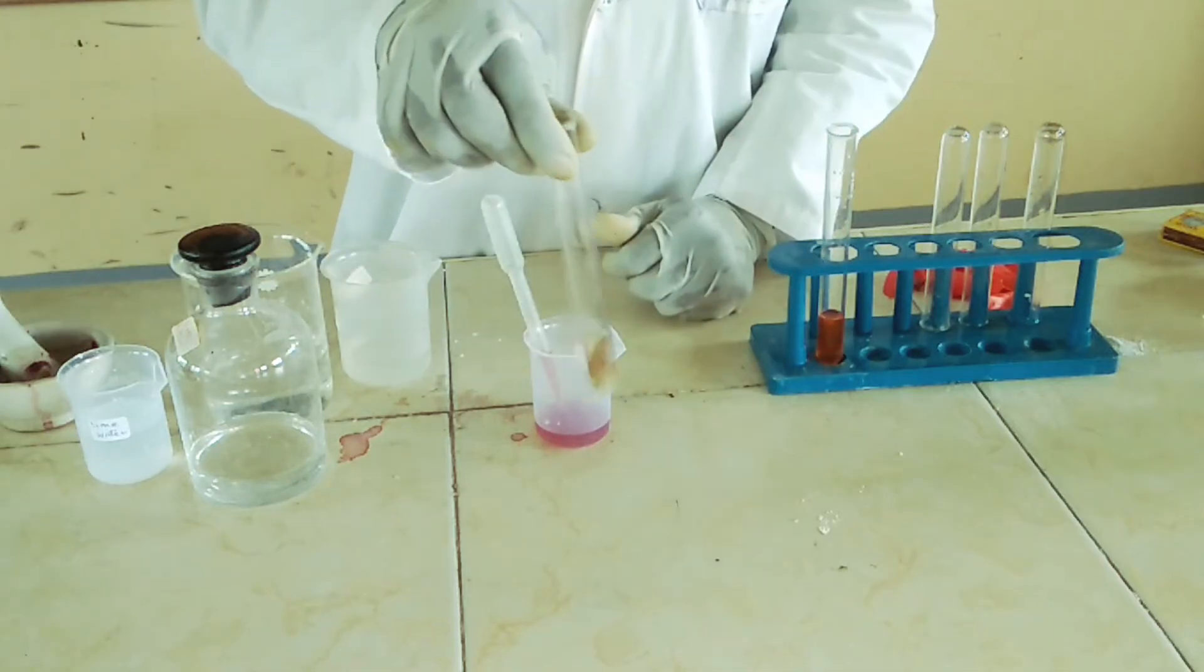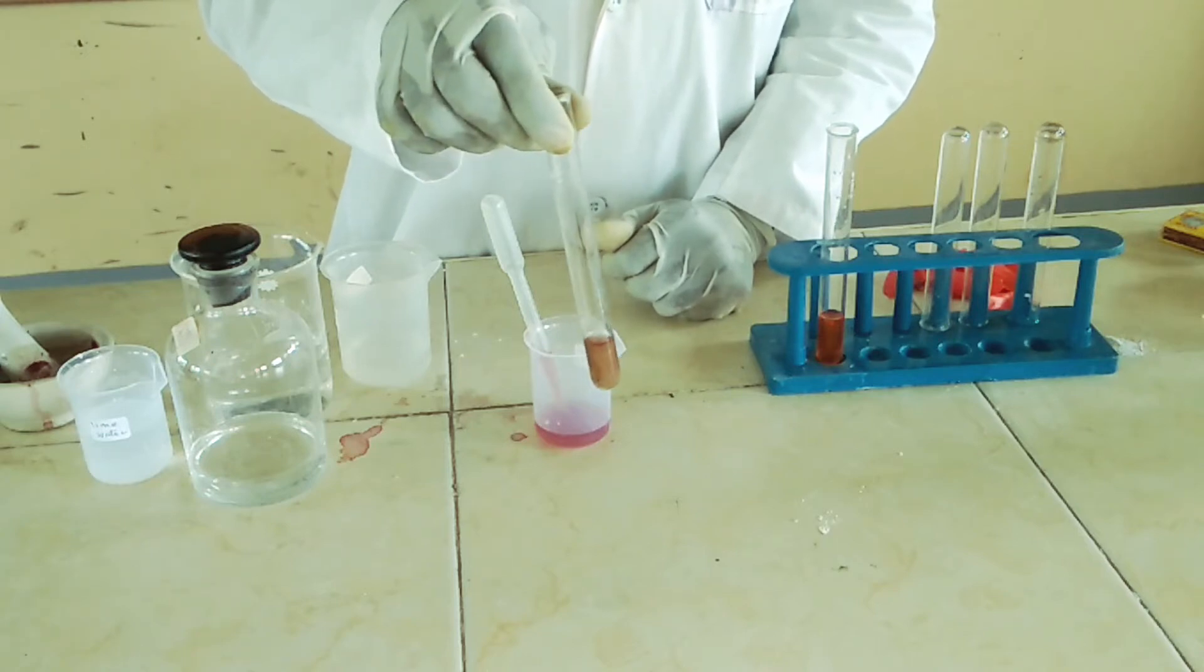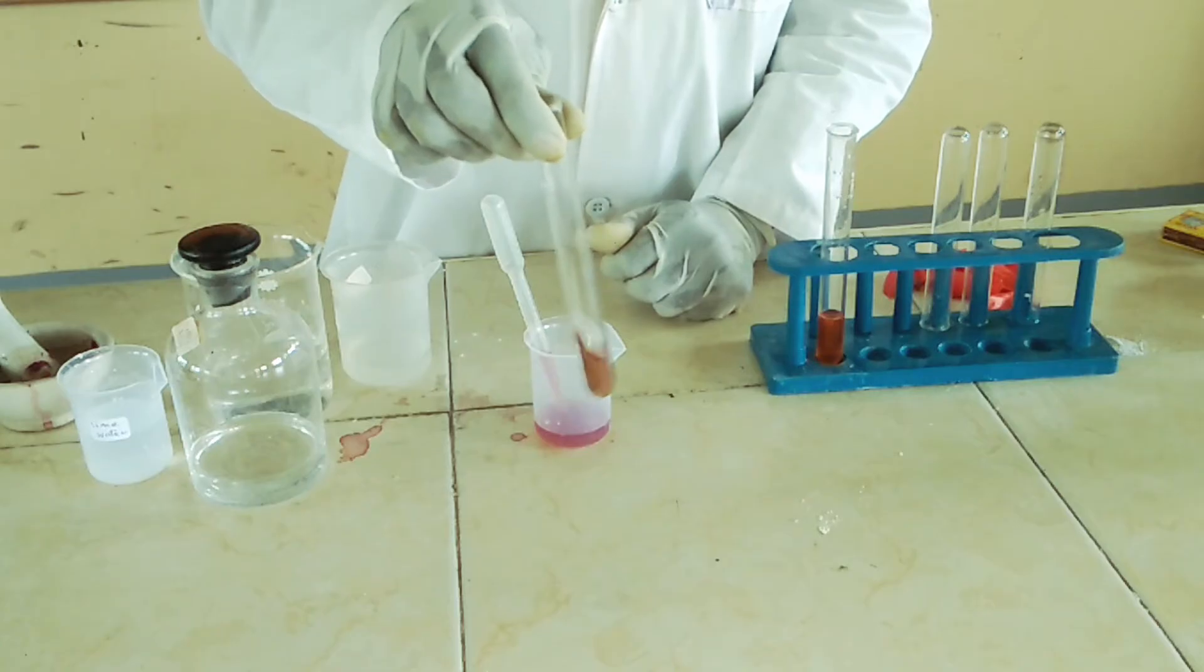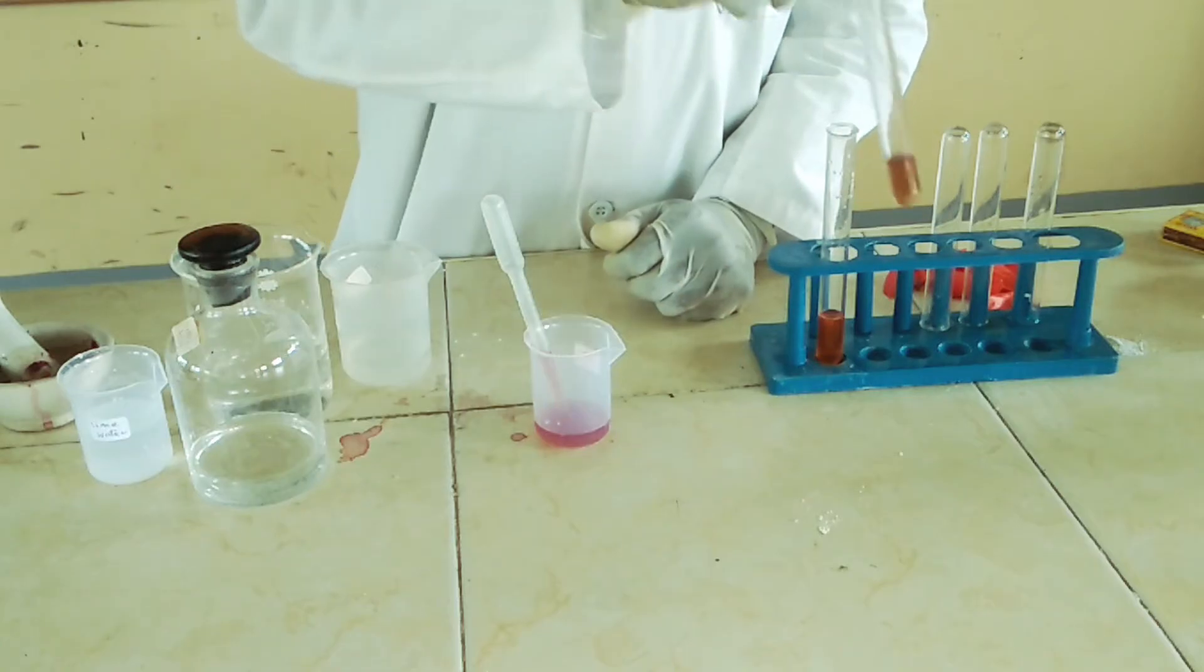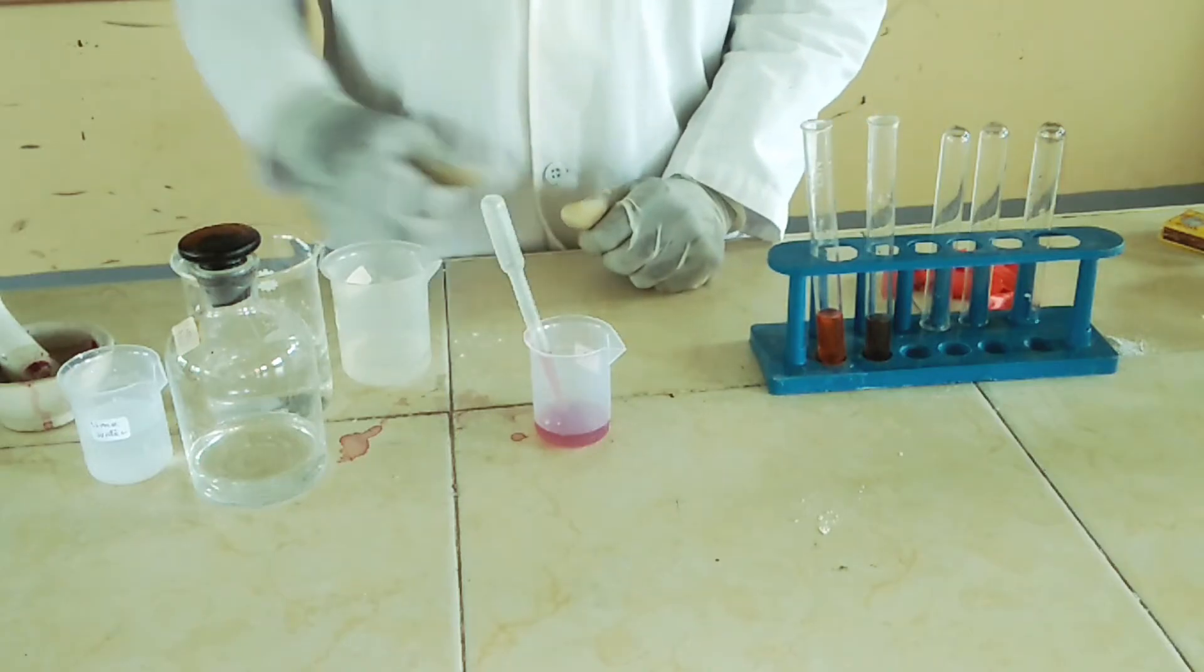Then I'm also going to add a few drops of the indicator and shake. So I'm getting a brown color that is almost green for our test. It's giving a different color from that which was given in an acid.